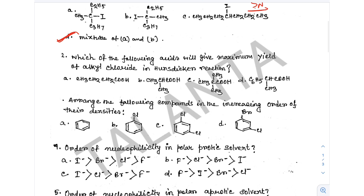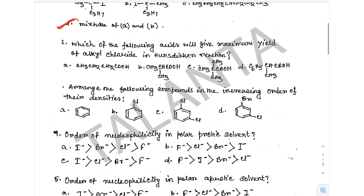Question 2: Which of the following acids will give maximum yield of alkyl chloride in the Hunsdiecker reaction? In the Hunsdiecker reaction, the reactivity of alkyl halides is: 1-degree alkyl halide greater than 2-degree, greater than 3-degree. When branching is less, the Hunsdiecker reaction proceeds better.